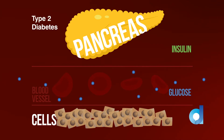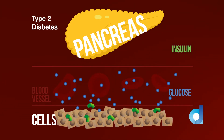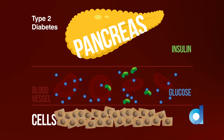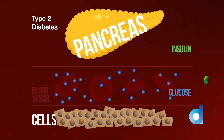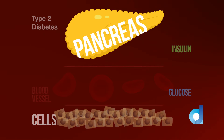With Type 2 Diabetes, the problem is there is not enough insulin being produced by the pancreas, and the body cells don't respond to insulin as well as they used to — a problem called insulin resistance. Glucose can't enter the cells as easily, so it builds up in the blood.